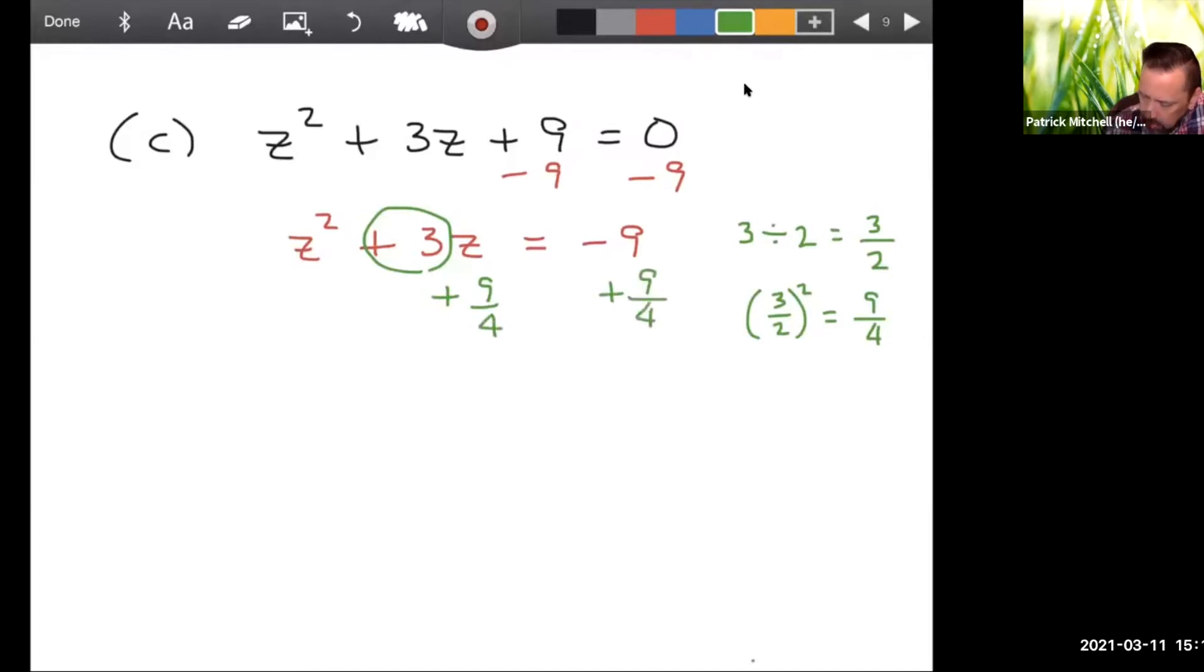Alright, so that gives us z squared plus 3z plus 9 fourths equals what is negative 9 plus 9 fourths? I'm just going to do it right here. Think of that as 9, negative 9 over 1. Multiply the top and the bottom by 4. That would give you negative 36 over 4 plus 9 over 4, which is negative 27 over 4.